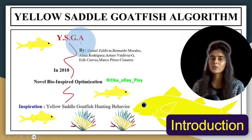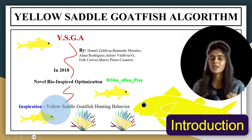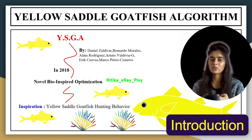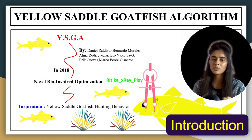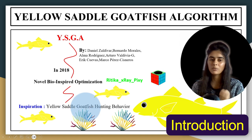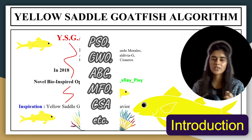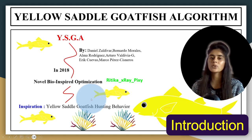The Yellow Saddle Goatfish Algorithm was introduced in 2018. It is a bio-inspired, population-based metaheuristic optimization algorithm inspired by the yellow saddle goatfish hunting behavior. Its performance is tested using different standard benchmark test functions and applied to real-life engineering design problems. Results are compared with nine well-known metaheuristic algorithms including Particle Swarm Optimization, Grey Wolf Optimization, Artificial Bee Colony, Crow Search, and Moth-Flame Optimization.